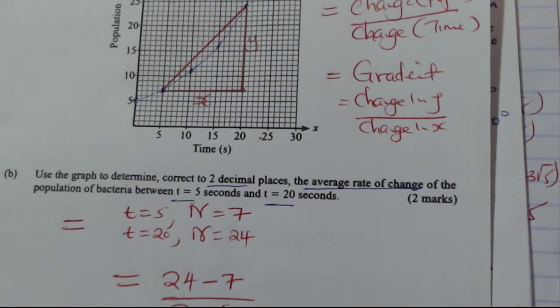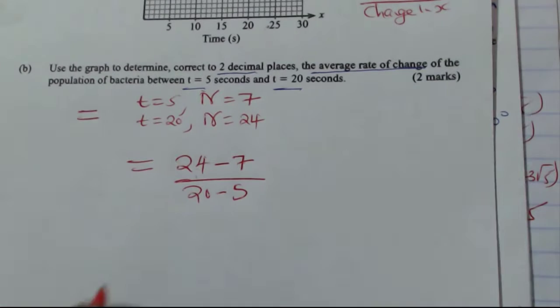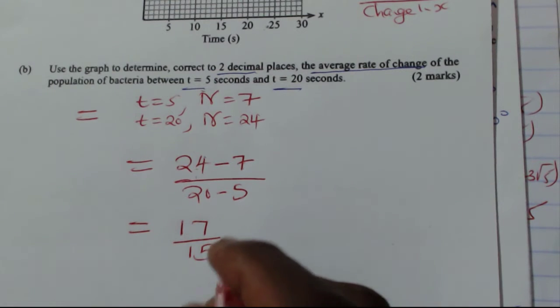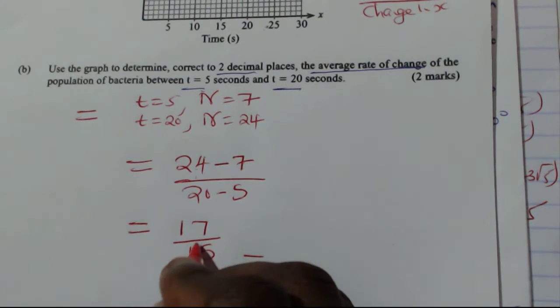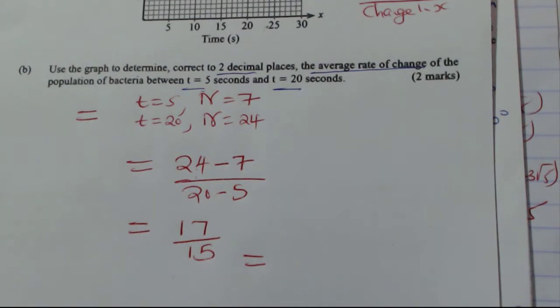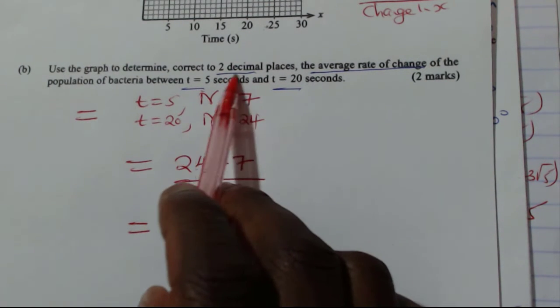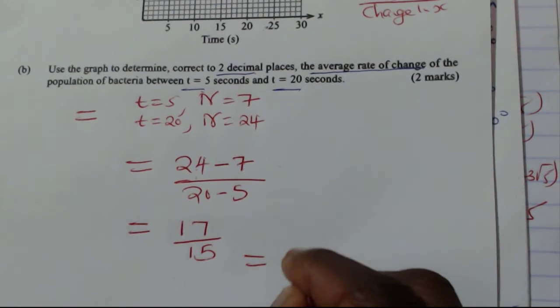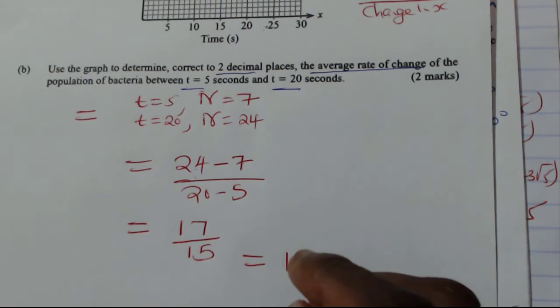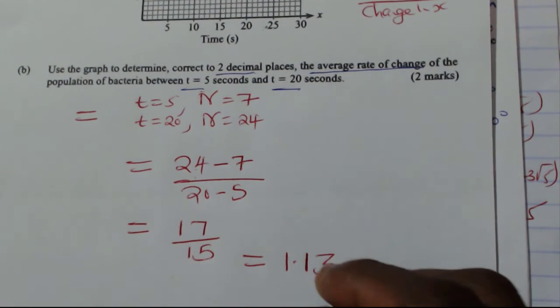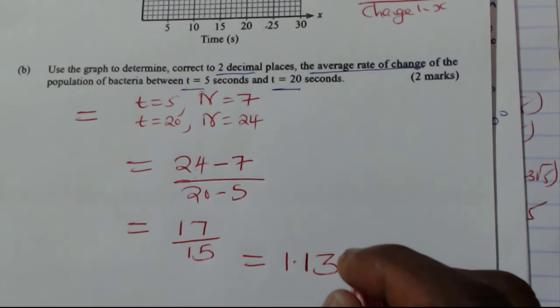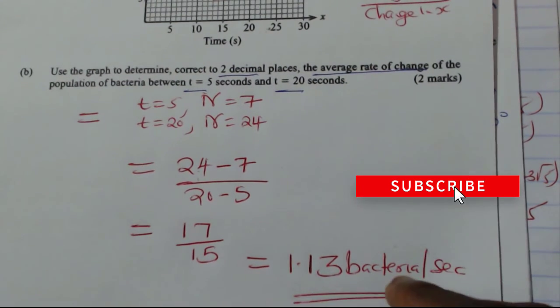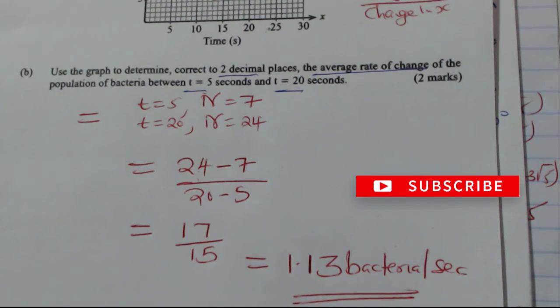And this will give 24 minus 7 equals 17, and 20 minus 5 equals 15. And when you work out these, 17 divided by 15, you will get, correct to two decimal places, 1.13. And this change represents bacteria per second. So that is how you're supposed to solve that question.